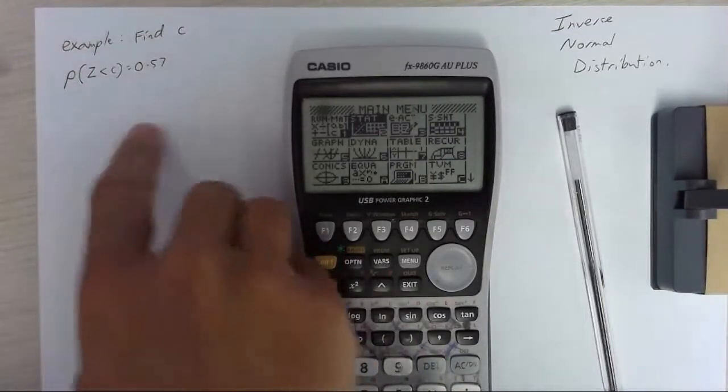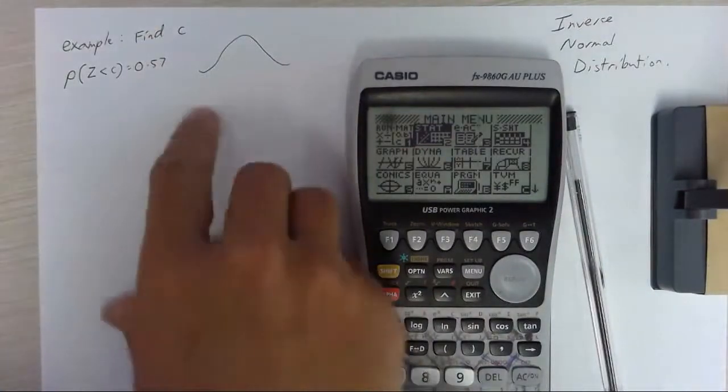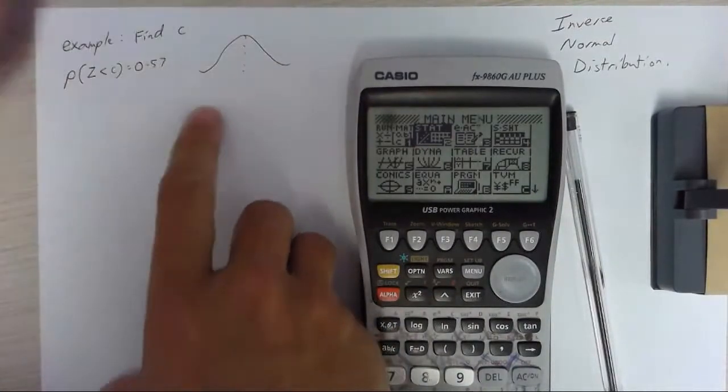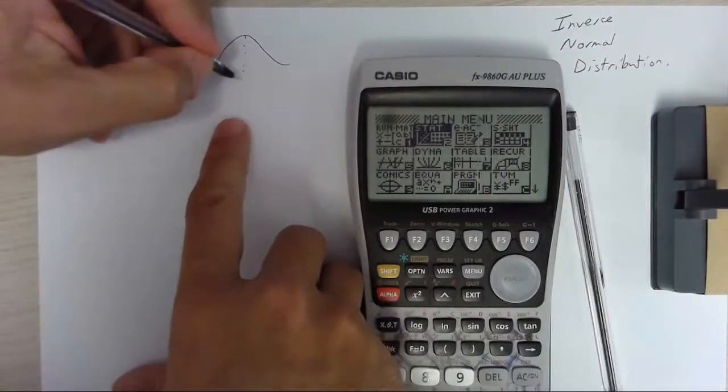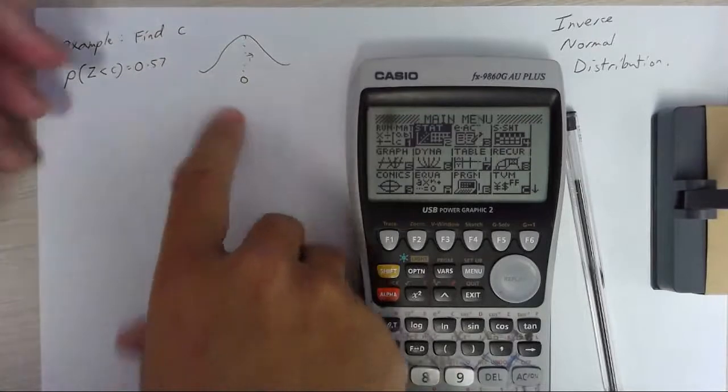I'm just going to draw what this would look like on a curve. So here's my curve. Now it's a standard normal distribution which means that the mean is zero and the standard deviation is one.